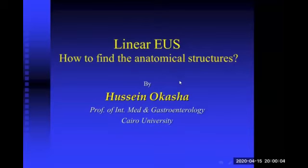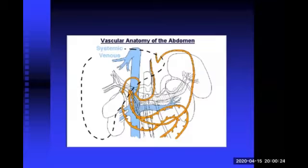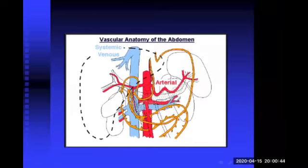Today's lecture is about basic linear EUS examination - how to examine intra-abdominal and intrathoracic structures by endoscopic ultrasound, different stations, and the anatomical landmarks of each station. There are many structures visualized during EUS examination, including the systemic venous circulation, the inferior vena cava, the abdominal aorta and its main branches, the celiac axis with its three main branches: left gastric, splenic artery, common hepatic artery, and the superior mesenteric artery.